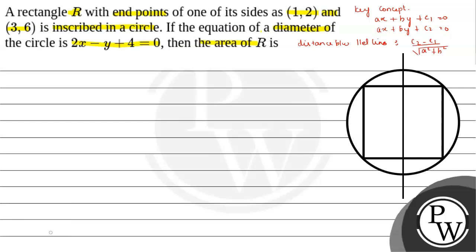It is given that the rectangle is inscribed in a circle, so the rectangle is inside the circle. Let us take the rectangle as A, B, C, D where one side has endpoints A as (1,2) and B as (3,6). The equation of the diameter of the circle is 2x minus y plus 4 equals to 0. Let us take M as the midpoint on the diameter.